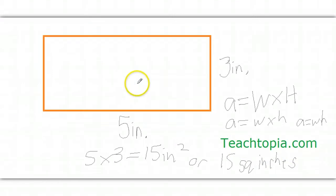So, how do you find the area of a rectangle? It is the width times the height, and don't forget the good old label. This was Jody from Teachtopia TV with a brief tutorial on how to find the area of a rectangle.